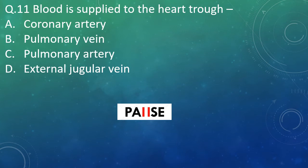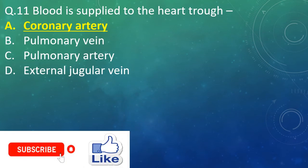Question 11 [stem not captured]: Option A: coronary artery. Option B: pulmonary vein. Option C: pulmonary artery. Option D: external jugular vein. And the right answer is Option A — coronary artery.